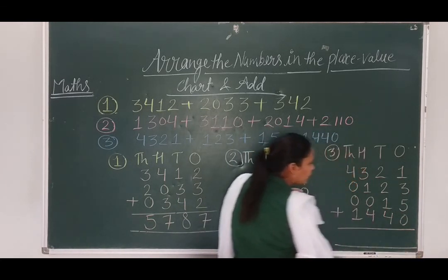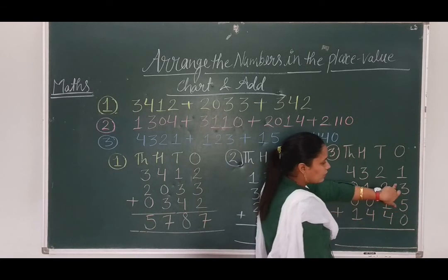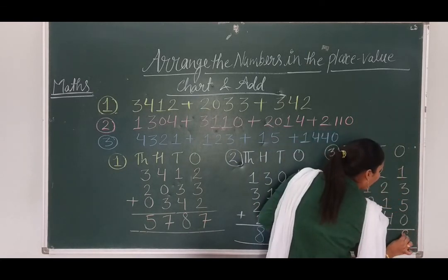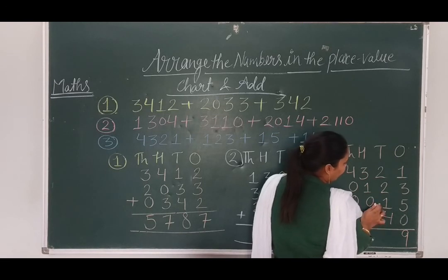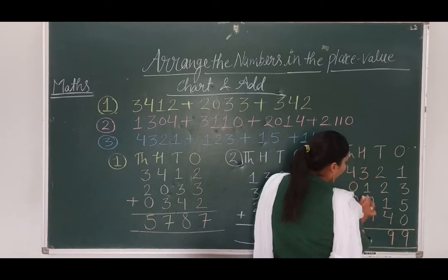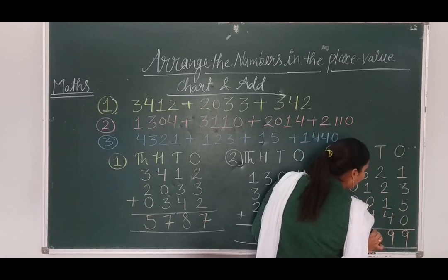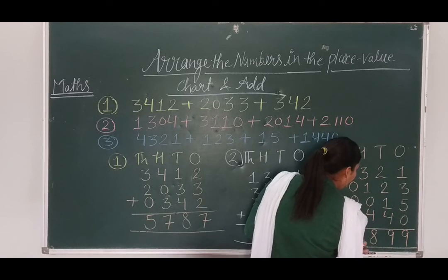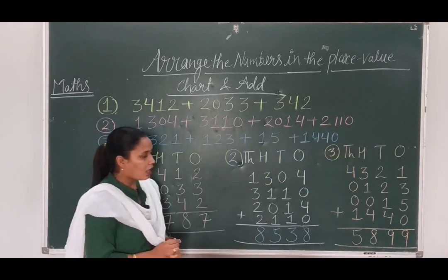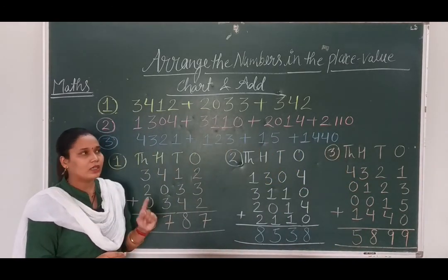Same way, we will add this. 5 plus 3, 8. 8 plus 1, 9. 2 plus 2, 4. 4 plus 4, 8. 4 plus 1, 9. 3 plus 1, 4, 4 plus 4, 8 plus 0, 8. 4 plus 1, 5 plus 0, 5. So, our answer is 5899.